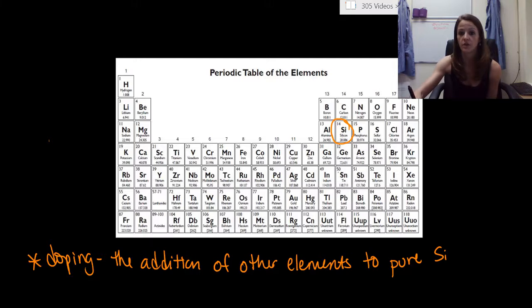Now, what we need to do is look at neighboring elements. So I'm going to draw your attention to gallium, which is one less. So the gallium has three valence electrons, and then I'm also going to draw your attention to arsenic, which has five valence electrons.